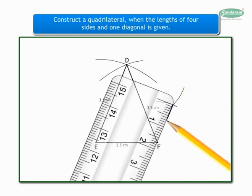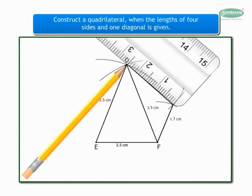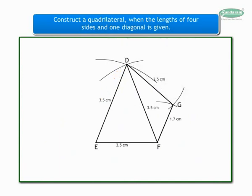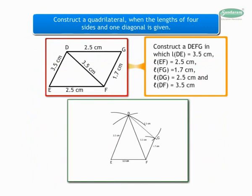Again, join the point of intersection of the two arcs to point F and point D, and name it as point G. Construction of the quadrilateral is complete. We shall now mention the measures of the sides and diagonals in our accurate figure.